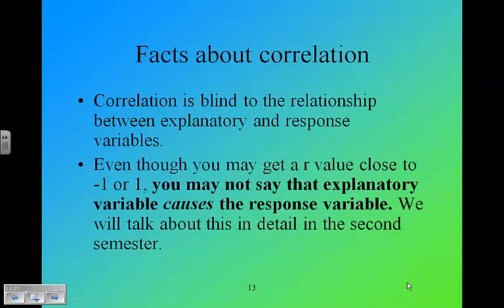Correlation is blind to the relationship between explanatory and response. In other words, you can flip the x and the y and put the y on the x-axis and the x on the y-axis and it won't change the correlation at all. Correlation doesn't matter which one's x and which one's y. Finally, even though you may get an r value closer to negative 1 or 1, you cannot say that the explanatory variable causes the response variable. Correlation does not mean anything about causation. We're going to talk about this in detail later.